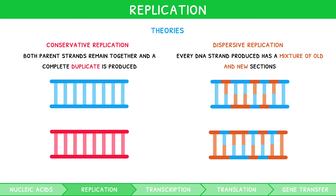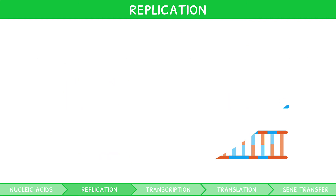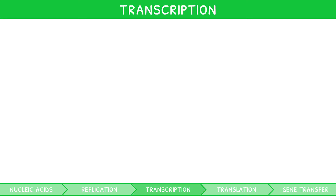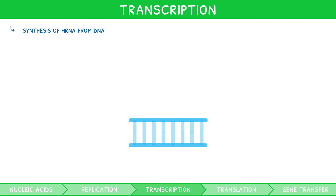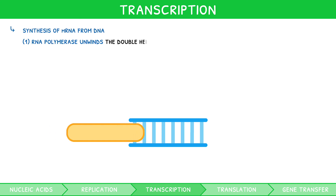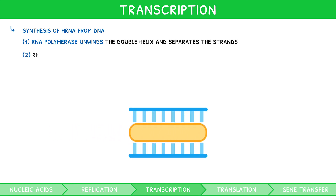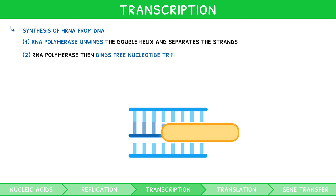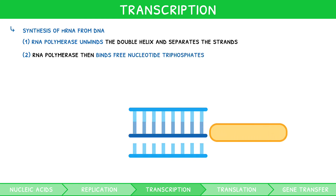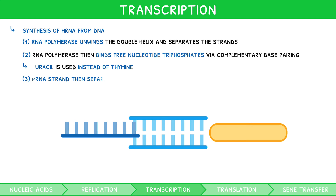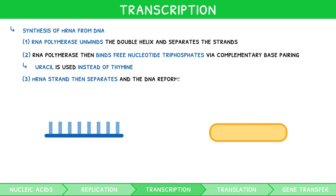You now know the structure and replication of DNA. But how is it actually used? This is the role of transcription. Transcription is the synthesis of mRNA from DNA. During this process, RNA polymerase unwinds the double helix and separates the strands. RNA polymerase then binds free nucleotide triphosphates to one of the pre-existing strands via complementary base pairing. However, given that RNA is generated, uracil is used instead of thymine when forming the complementary base pair to adenine. Once complete, the mRNA strand then separates from the DNA, and the DNA reforms its double helix.